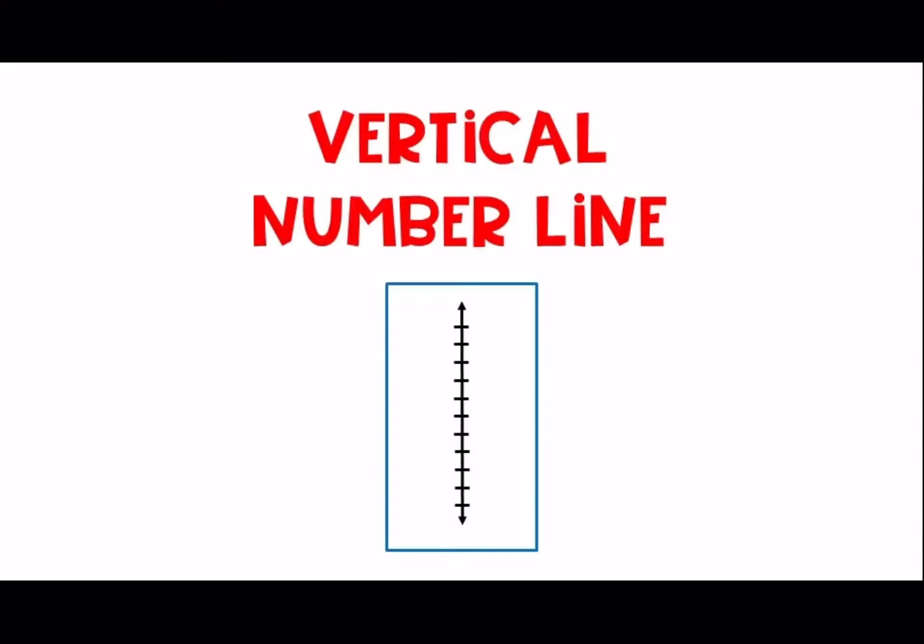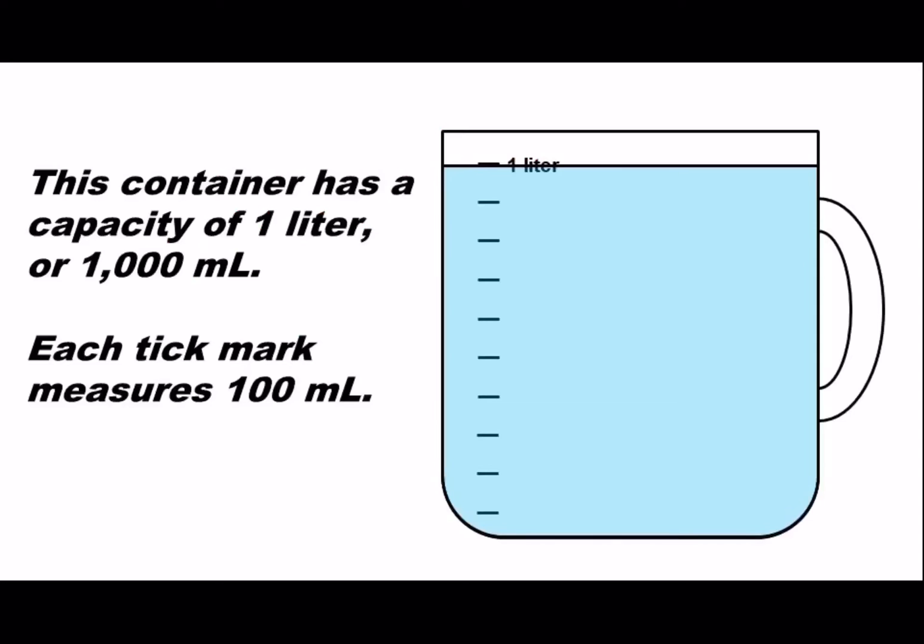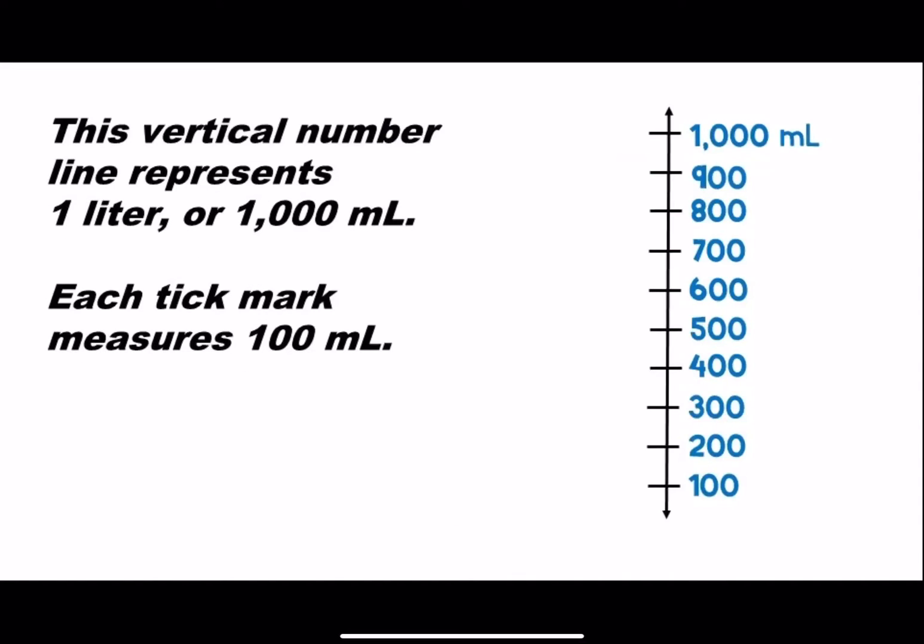This is a vertical number line. This container has a capacity of one liter or 1000 milliliters. Each tick mark measures 100 milliliters. This vertical number line represents one liter or 1000 milliliters, again each tick mark measures 100 milliliters.